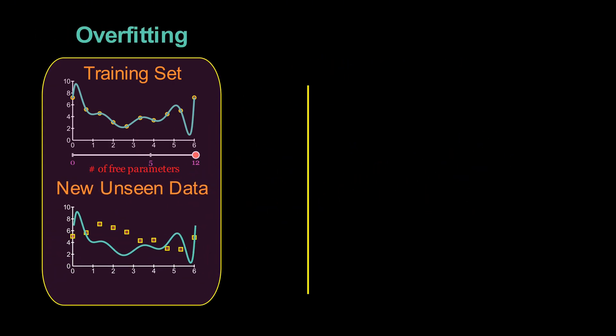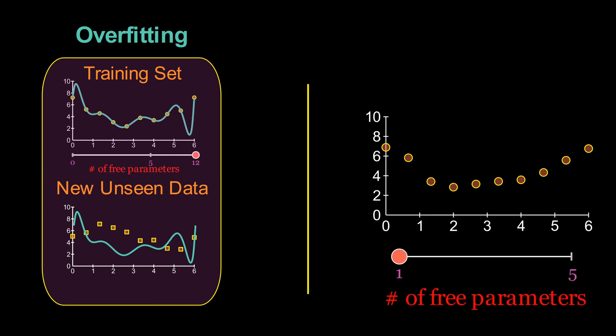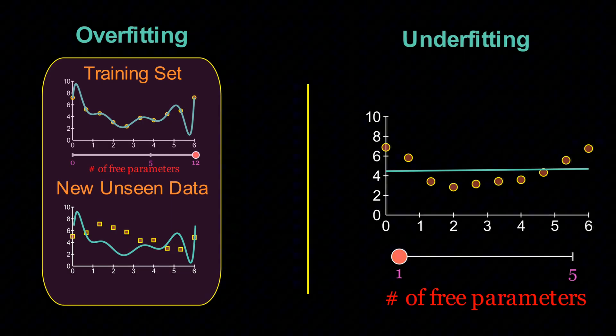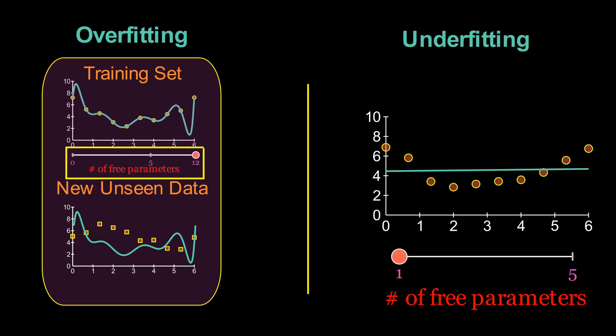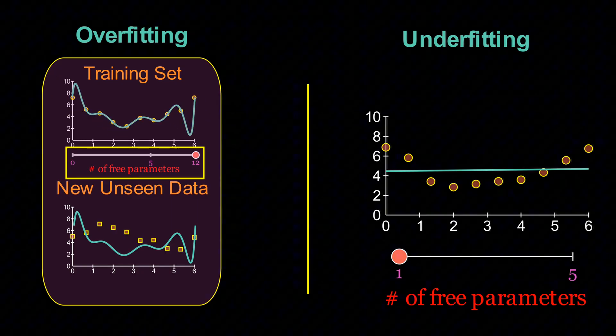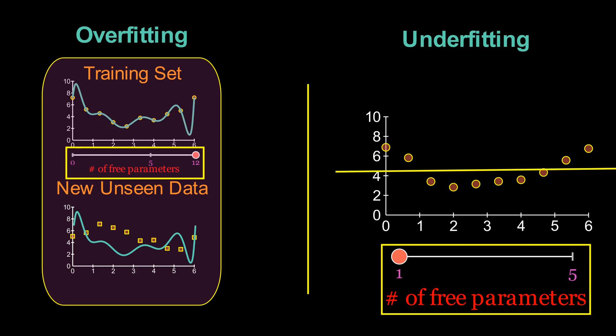On the other end of the spectrum, if we restrict the number of parameters too much, the model fails to even capture the training data. That's underfitting. So the tension is clear. Too many parameters? Overfit. Too few? Underfit.